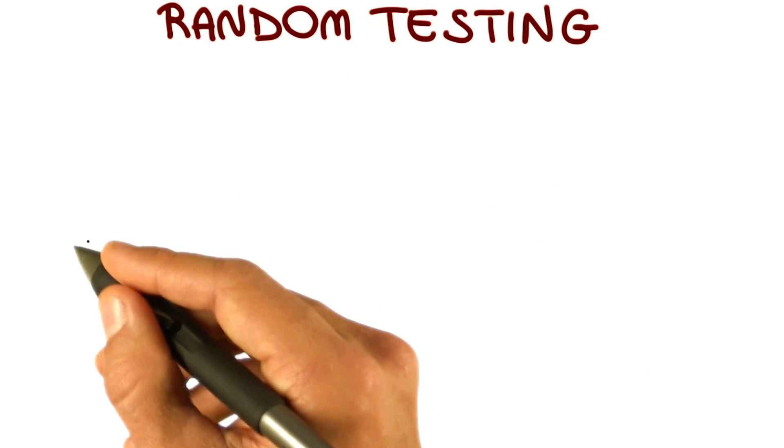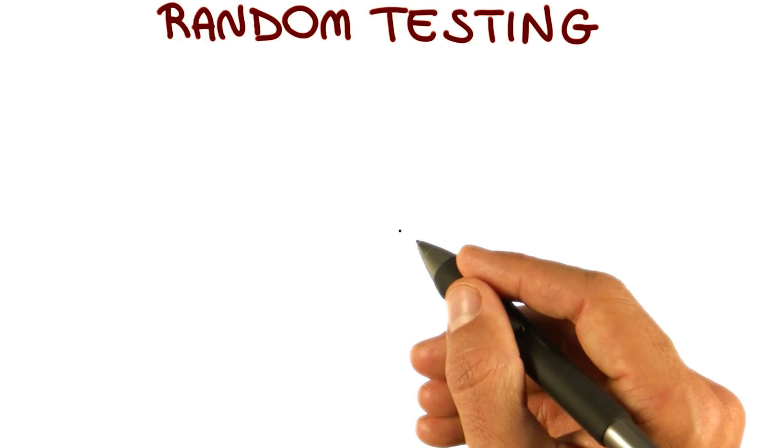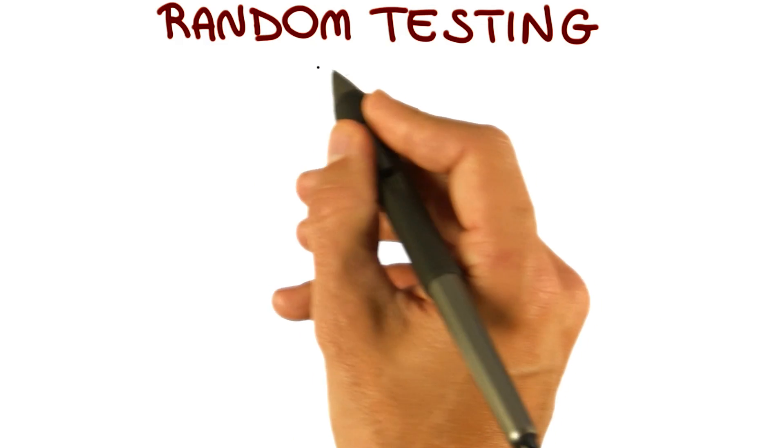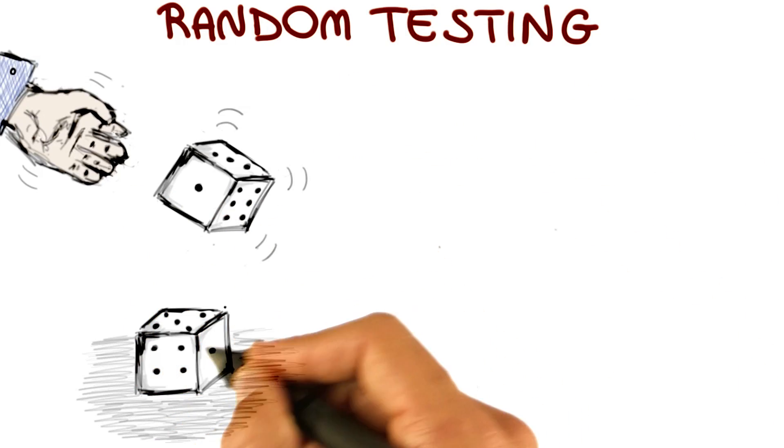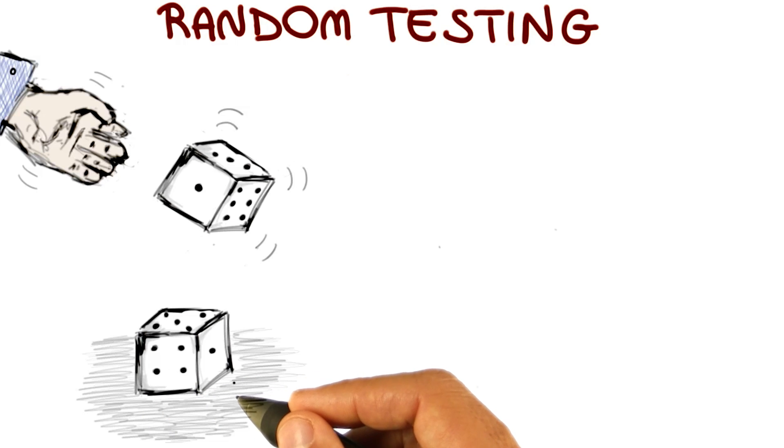Then maybe what we can do is just pick our test inputs randomly, to do what is called random testing. That means we pick the inputs to test just as we pick a number by rolling a set of dice, randomly.